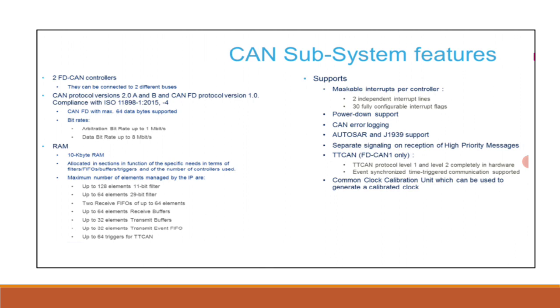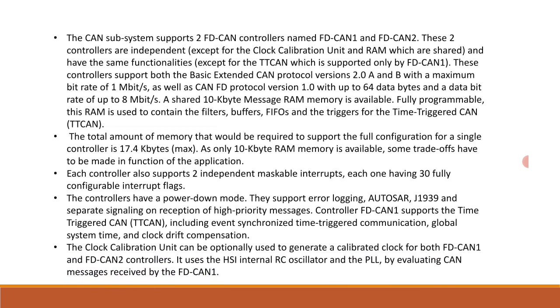The clock calibration unit can optionally be used to generate a calibrated clock for both FD CAN 1 and FD CAN 2 controllers. It uses the HSI internal RC clock and the PLL clock by evaluating CAN messages received by FD CAN 1.